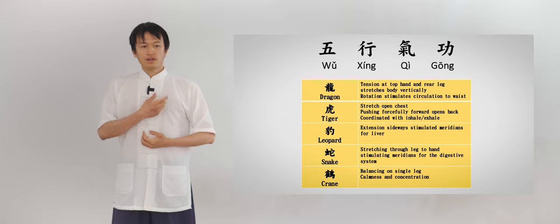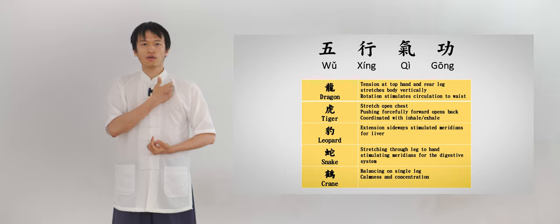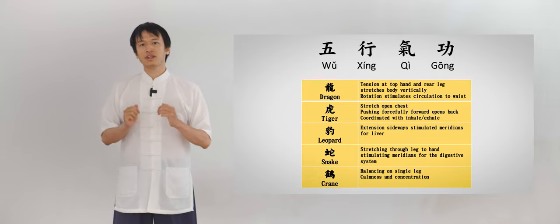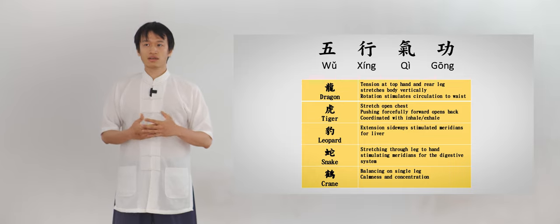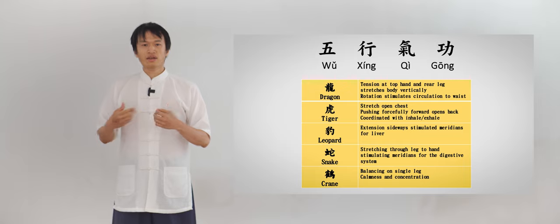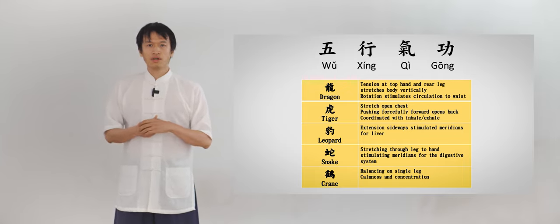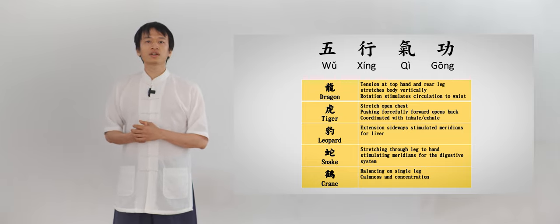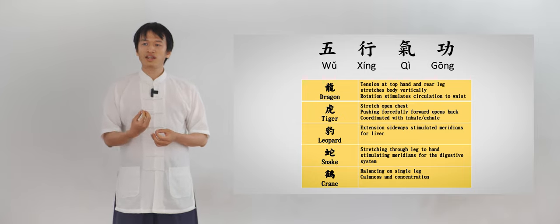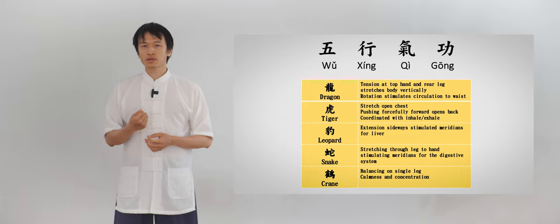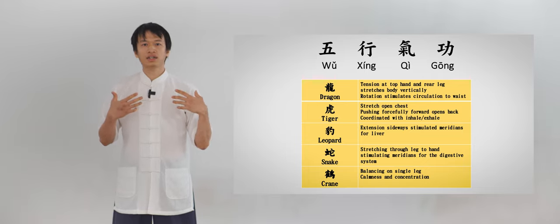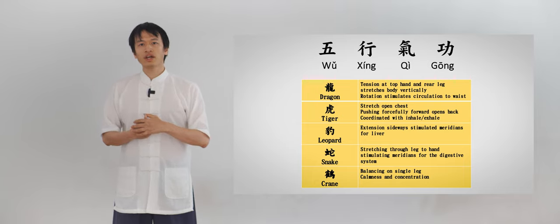The leopard is emphasizing on the stretching sideways. And therefore, it stimulates the meridians connected with liver. The jing mai, the meridians in Chinese medicine. Next, the snake, is grounded movement. And in the really long stretching posture, it stimulates the meridians connected with the digestive system. This is the spleen. Finally, the crane stands on single leg. And in balancing, the requirement is to stay calm and concentrated. Here, it emphasizes to calm down the heart and to be in peace and balance. So here, we have all the five animals in the wudang sanfengpai wuxing qigong.